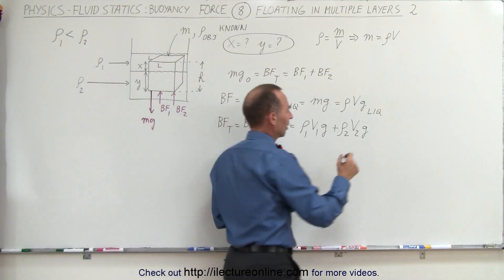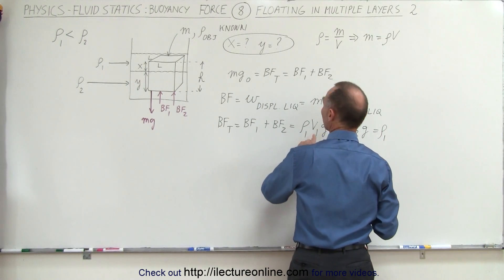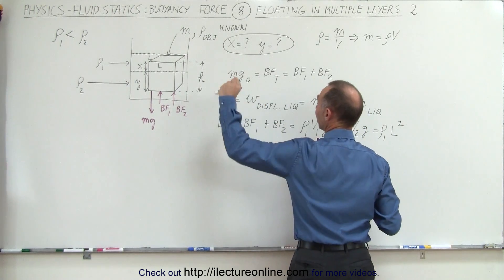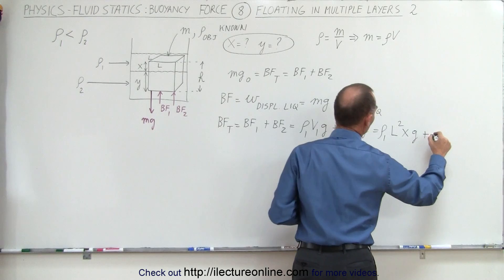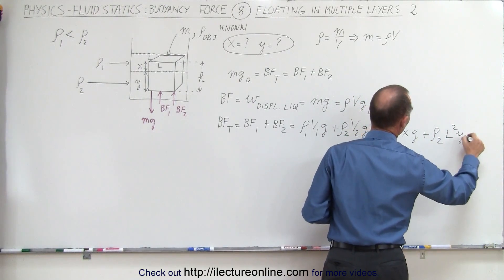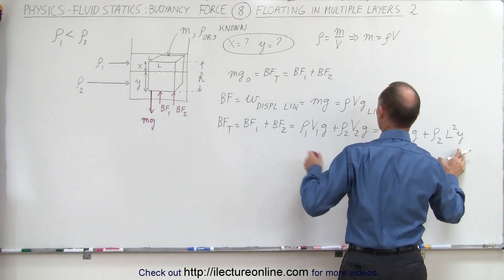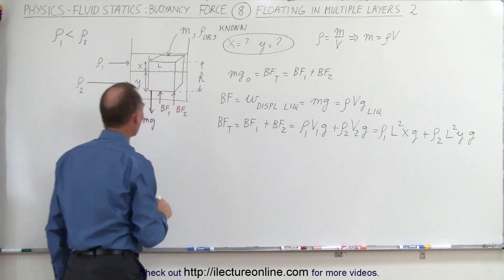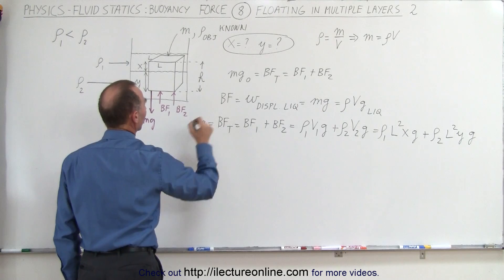So we can write that as the density of liquid 1 times volume 1 — which would be the cross-sectional area l² times x, the depth in layer 1, times g — plus the density of layer 2 times l² times y, which is the volume inside layer 2, times g. That would be the total buoyancy force, which must equal the weight of the object.